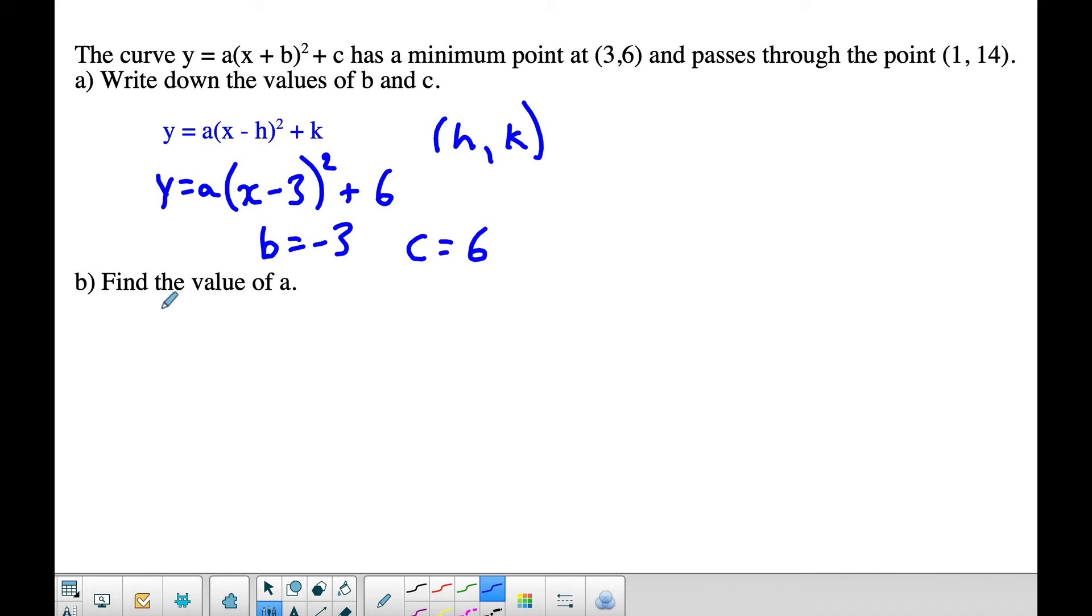Now, in part b, we're asked to find the value of a. And so I'm going to rewrite the equation: y equals a times (x minus 3) squared plus 6. And we're given information in the point, that x equals 1 and y equals 14.